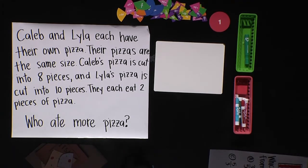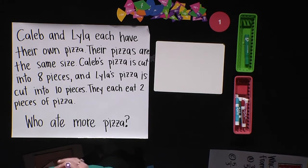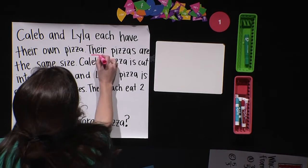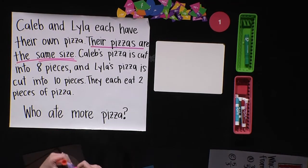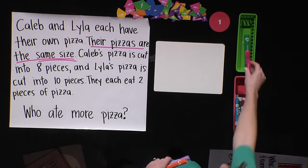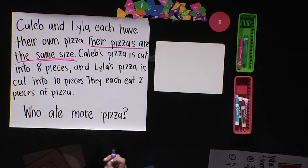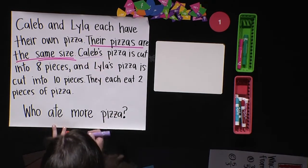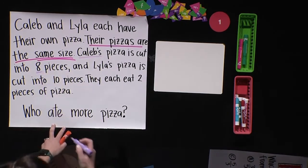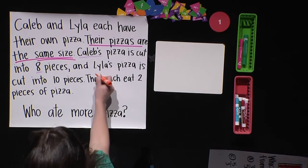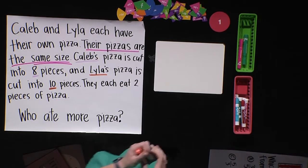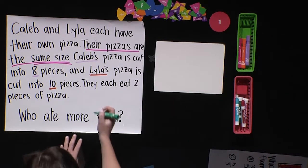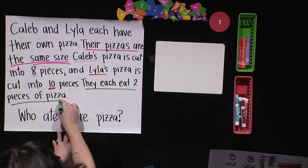Can you look at the question and identify a piece of really important information? I hope that you noticed that it says their pizzas are the same size. Lucky for them, because their wholes are the same, we can compare them. Let's look at the details of the problem. Caleb's pizza was cut into eight pieces, whereas Lila's pizza was cut into ten pieces. But that last sentence is pretty important — it tells us that they each eat two pieces of pizza.